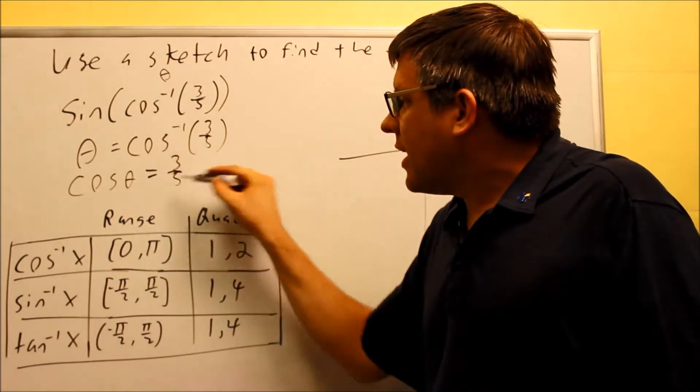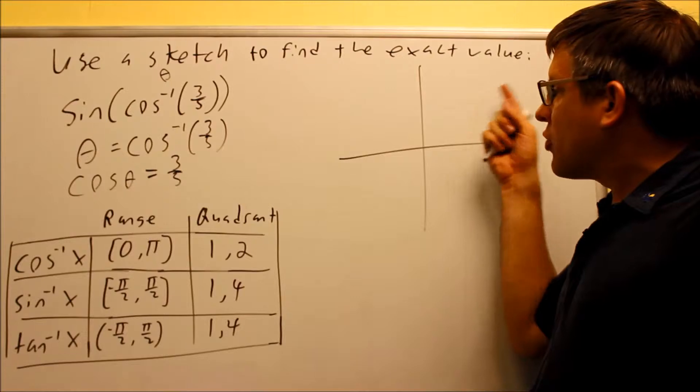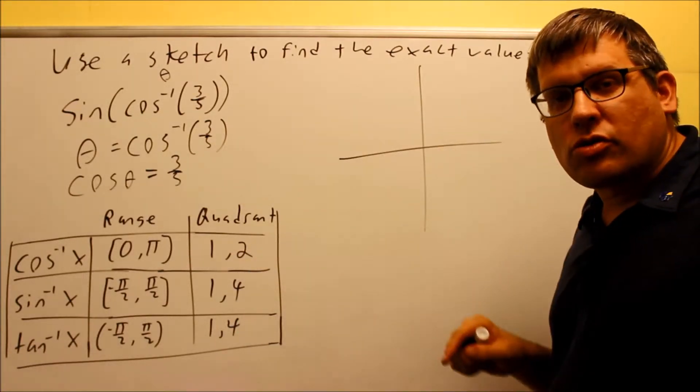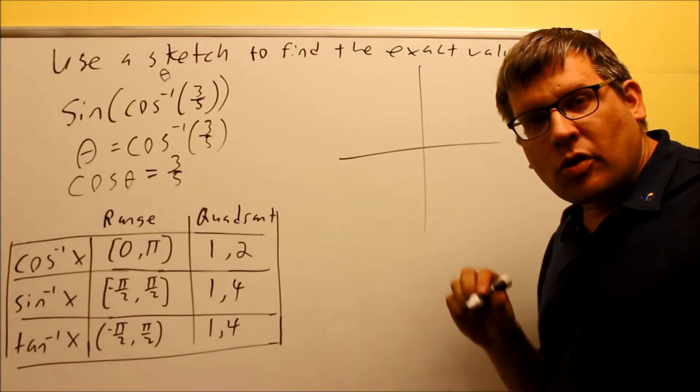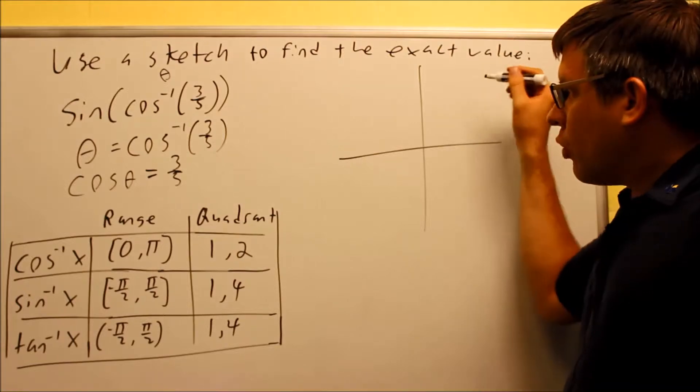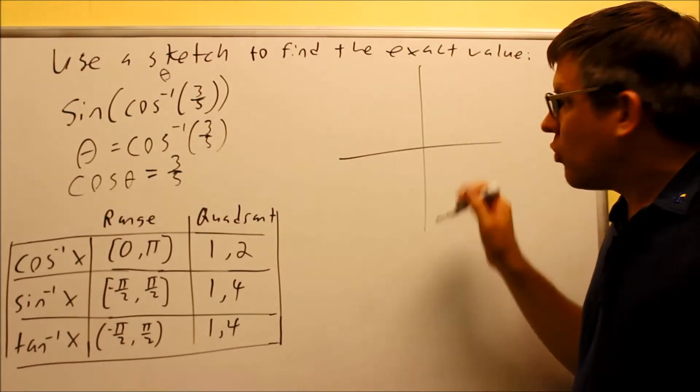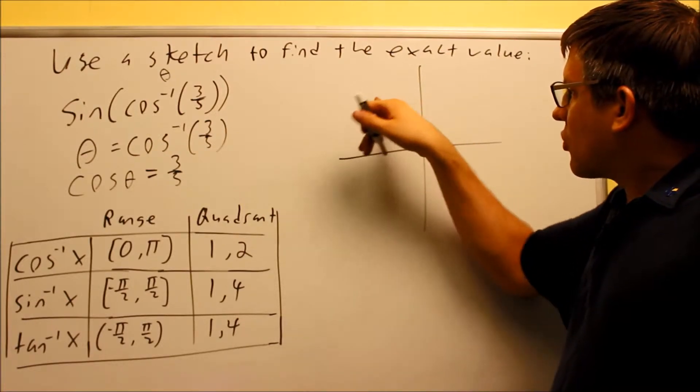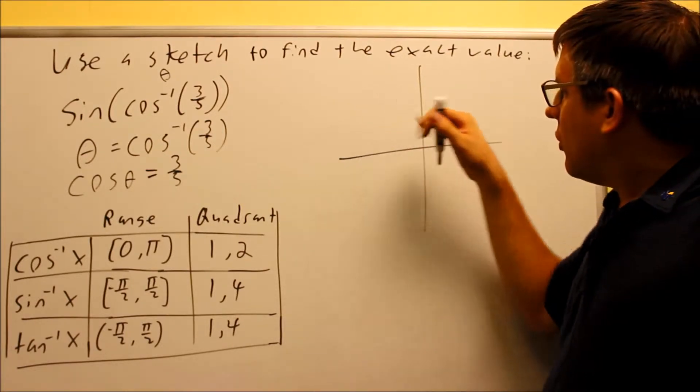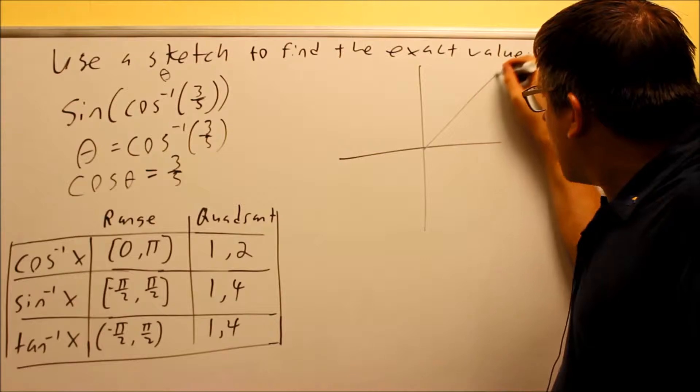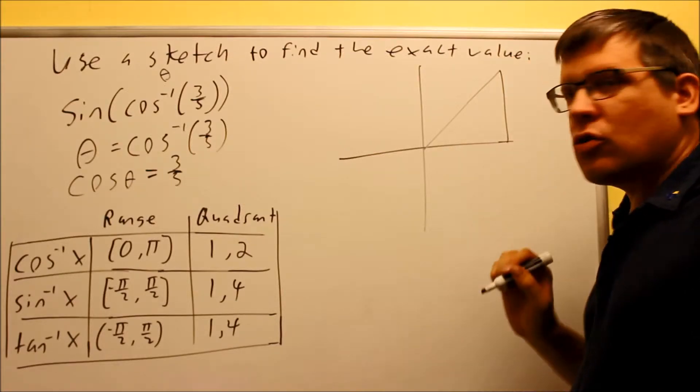So if I have a choice between quadrant one and quadrant two, I want to pick the one where cosine's positive. Well, when you do all students take calculus, all means everything is positive in the first quadrant. And then in this quadrant, cosine would be negative. So the only quadrant I can draw this triangle in is going to have to be in quadrant number one.